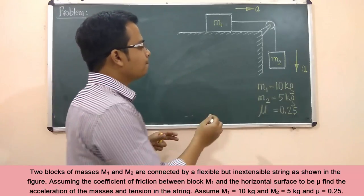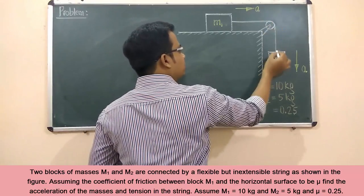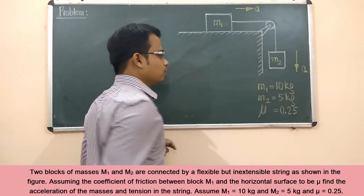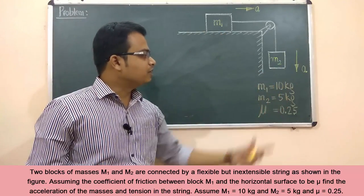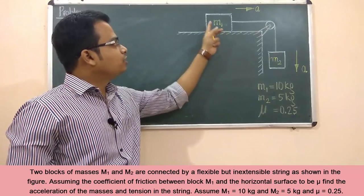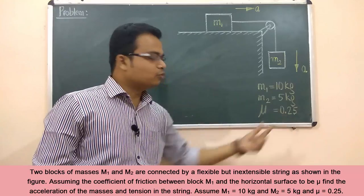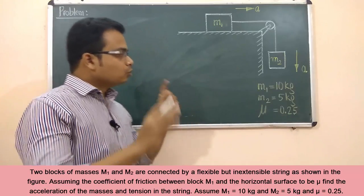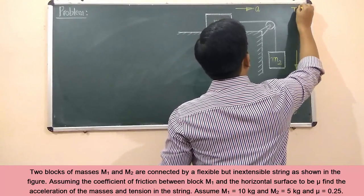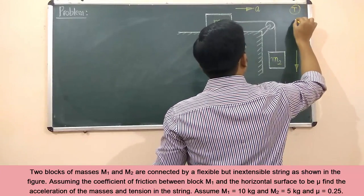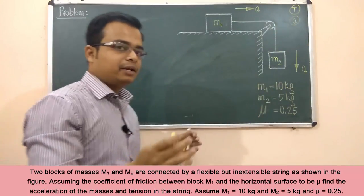Let me explain what this entire arrangement is about. There are basically two blocks, m1 and m2, connected together with the help of a pulley. The mass of block 1 is 10 kg, the mass of block 2 is 5 kg, and there is friction between block m1 and the surface — the coefficient of friction is 0.25. We have to calculate two things: the tension generated in the string, and the acceleration of the system.